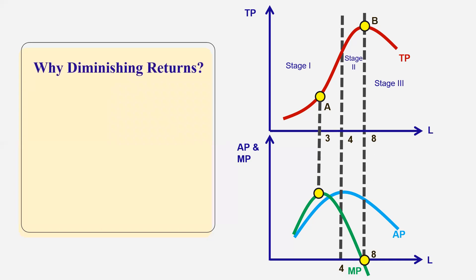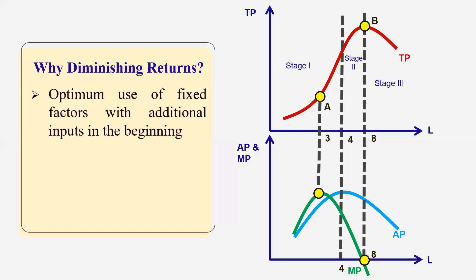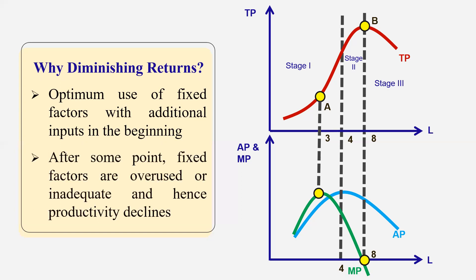Now, why do we have diminishing returns? In the beginning, we are using our fixed factors efficiently — we have the optimum use of fixed factors with additional labor units. But after some point, fixed factors are overused, overutilized, or inadequate, and hence productivity declines — therefore we have diminishing returns.